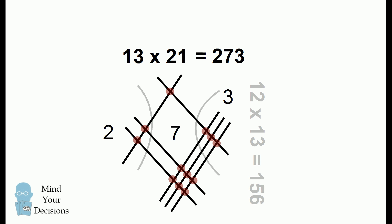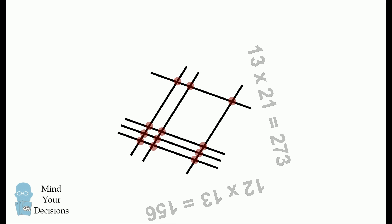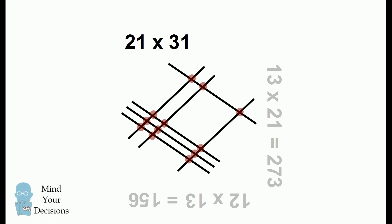And this is really cool — we've solved another problem from the same diagram we've already drawn. But we can even do more. Let's go ahead and rotate this diagram by 90 degrees once more. We now have a new diagram, and we can solve another multiplication problem. The lines going up and to the right are two lines followed by one line, which is 21. The lines going to the bottom right are three lines and then one line, so that's 31. So this diagram represents 21 times 31. We'll now count up vertically aligned intersections: one on the right, five in the center, and six on the left. So 21 times 31 is 651.